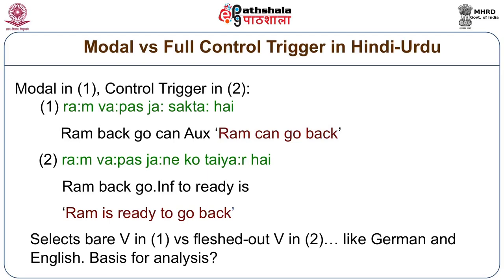Fortunately, syntacticians who study English and German don't depend just on these delicate inflectional morphology devices to distinguish modals from nearly synonymous lexical control triggers. Comparing examples 9 and 10 in English: the modal auxiliary 'can' is compatible with the expletive 'there,' but the control trigger 'be able to' is not. Thus, 'there can be serious trouble at the demonstration,' but you can't say 'there is able to be serious trouble at the demonstration.' Just as English syntax gives criteria to distinguish modals from control triggers, you can do the same for Hindi-Urdu using syntactic diagnostics.